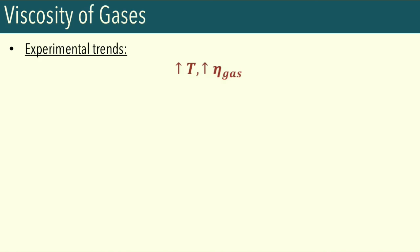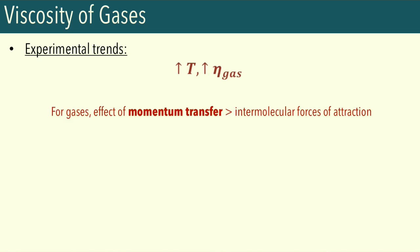Let's investigate the experimental trends and the molecular basis of the viscosity of gases. The experimental trend is that increasing temperature causes the viscosity coefficient of gases to also increase. Recall the two major causes of internal friction: momentum transfer and intermolecular forces of attraction. Since we're dealing with gases, intermolecular forces of attraction are not very significant. Because gases have very high kinetic energies, there's a greater chance of momentum transfer.